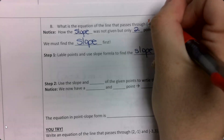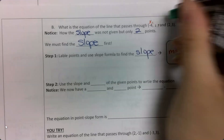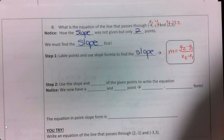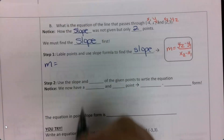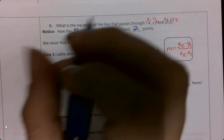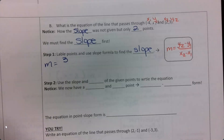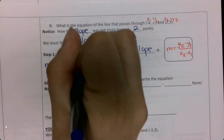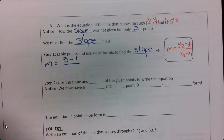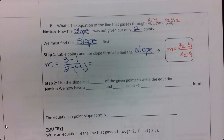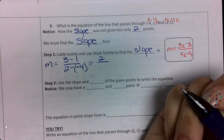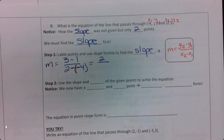I'm going to label my points x1, y1, x2, y2. Plugging into my formula: my y sub 2 is 3, my y sub 1 is 1, my x sub 2 is 2, and my x sub 1 is negative 4. So I want to go ahead and simplify: 3 minus 1 is 2, and 2 minus negative 4 is the same as adding positive 6.